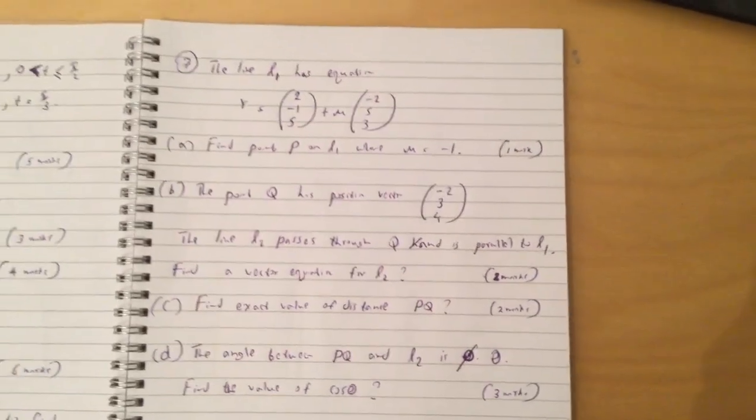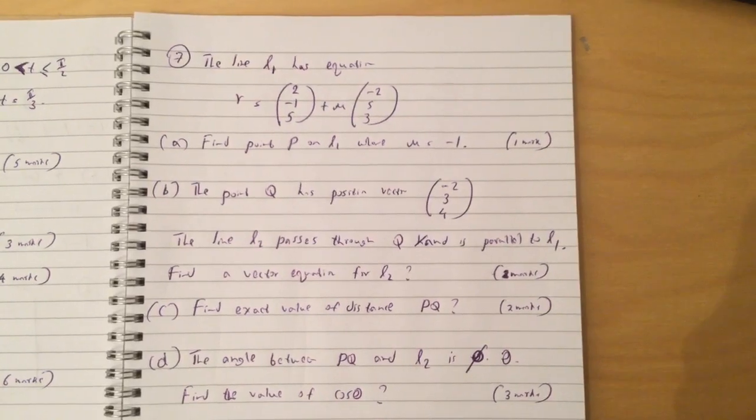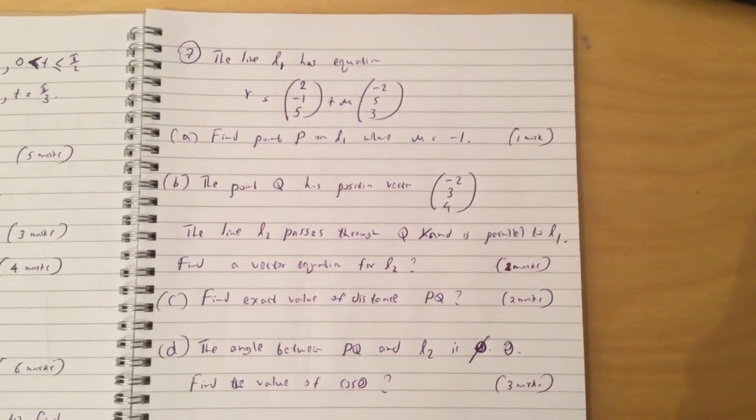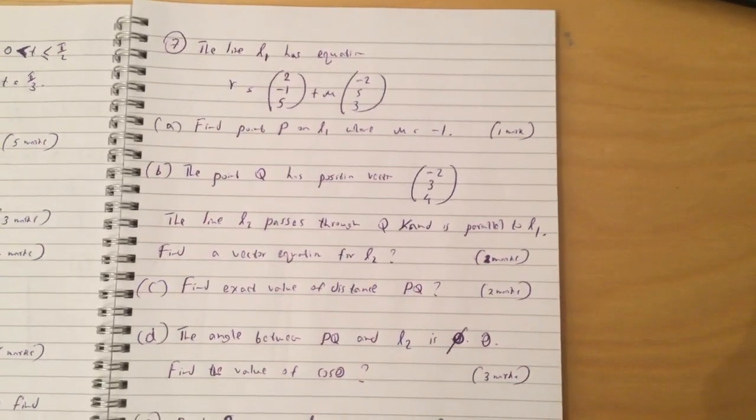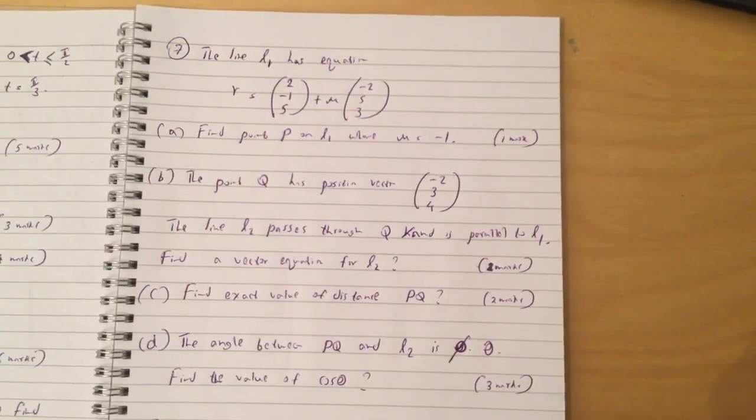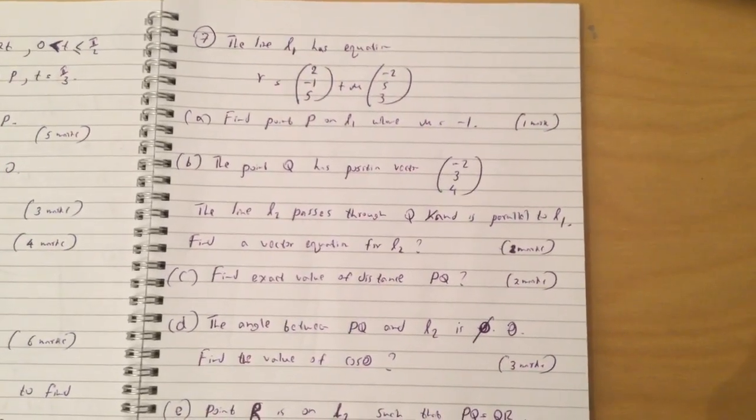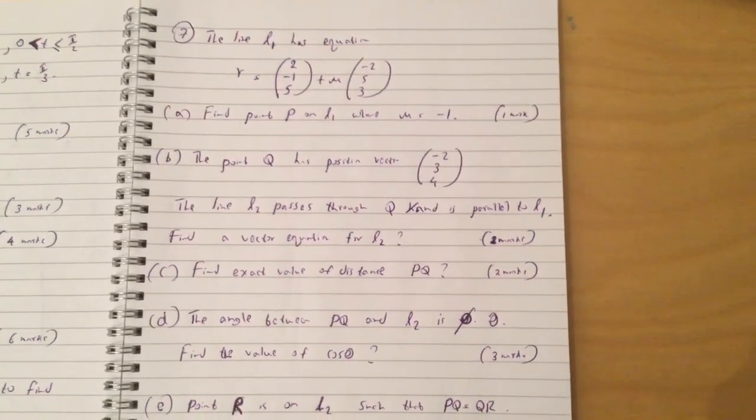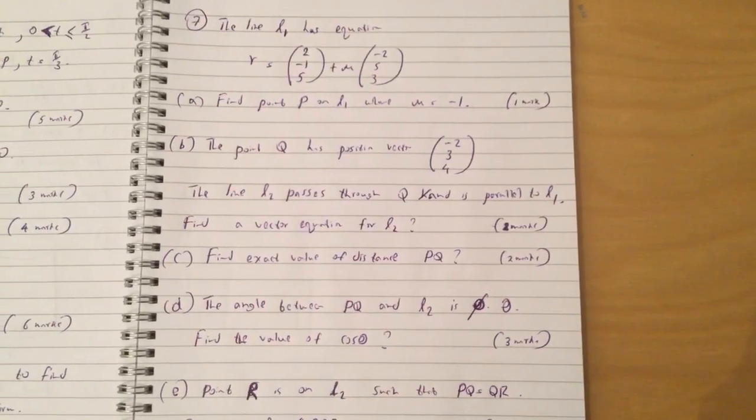Question 7: The line L1 has equation i equals 2 minus 1 5 plus mu minus 2 5 3. Question A: Find point P on L1 where mu equals minus 1. The point Q has position vector minus 2 3 4. The line L2 passes through Q and is parallel to L1. Find a vector equation for L2.